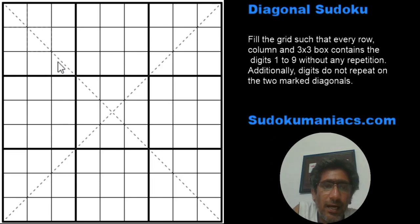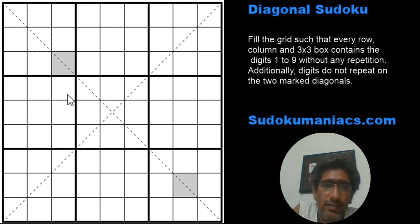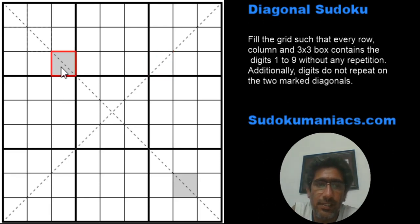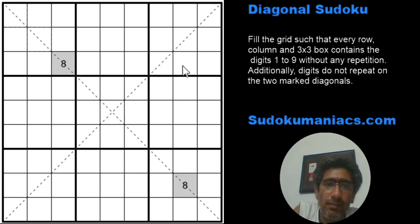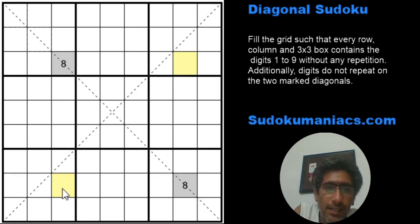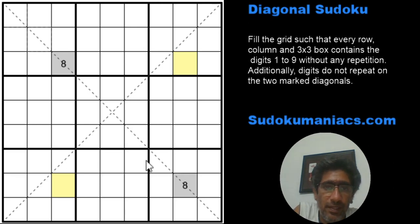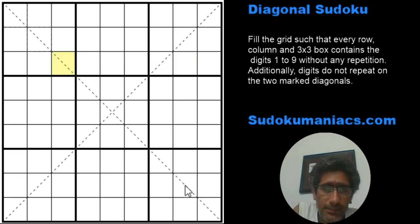It's not necessary that this has to occur along the diagonal. For example, if I mark two cells as gray 8s and look for their buddy cells, I find two yellow cells. Irrespective of where the 8 is placed in the gray cells, it cannot occur in the yellow cells, because those yellow cells share a row or a column with the two gray cells. Going forward with this, let's see how we can solve today's puzzle.